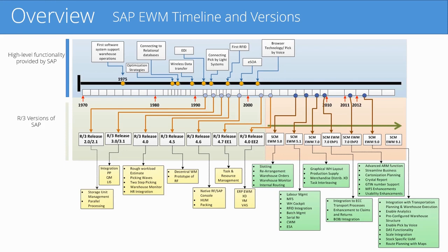On the right side, we can see the different versions of the Extended Warehouse Management system. In the bottom of the chart, we can see the different warehouse management functionality and when it was provided by SAP. Now let's go a little bit more in detail with that timeframe and the functionality, and then I will go over some of the details in the boxes at the bottom of the screen.